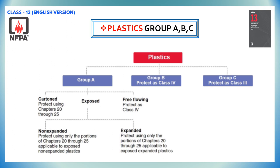Group B plastics are treated as class 4 commodities and consist of chloroprene rubber, fluoroplastics, ethylene tetrafluoroethylene, etc. Group C plastics are treated as class 3 commodities and consist of fluoroplastics, melamine, phenolic, PVC, PVDC, PVDF, urea, etc.